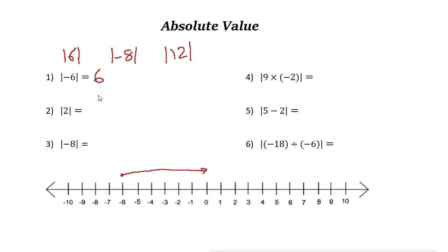So absolute value is a simple idea: it's the distance of that number to zero or from zero. Absolute value of two—two is here. Two to zero, the distance is just two units, so the answer is two. Absolute value of negative eight to zero is just eight.